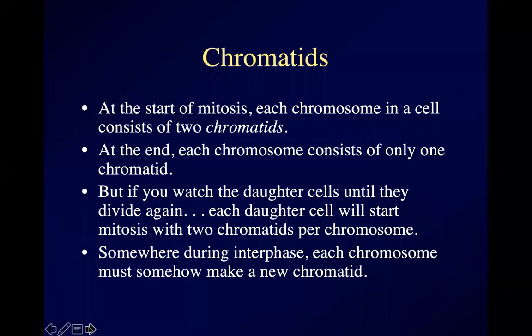The chromosomes appear in prophase. They line up in the middle at metaphase. The centromere breaks and the separate chromatids move to opposite sides of the cell — that's anaphase. And then at the end, two new nuclei form, which is telophase. Usually at the same time as telophase, the entire cell divides in two, which is called cytokinesis.